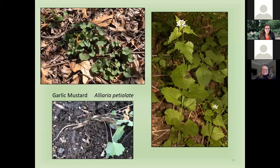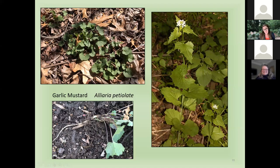This is garlic mustard. It's a biennial — it has a two-year life cycle. This is the first-year plant here and this is the second-year plant with the flowers. All these invasives are very persistent and hard to get rid of. This is a rosette I just pulled out the other day — look how long that root is. You have to be persistent with everything. It's never over.